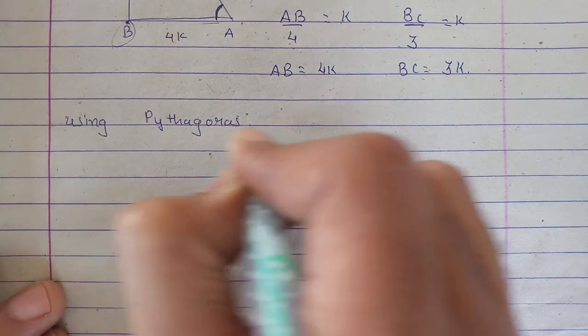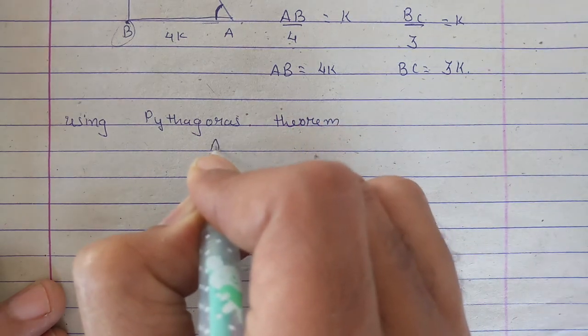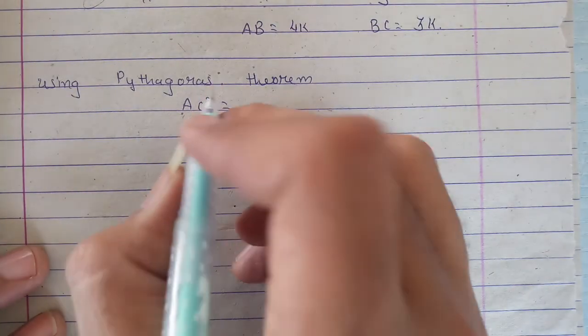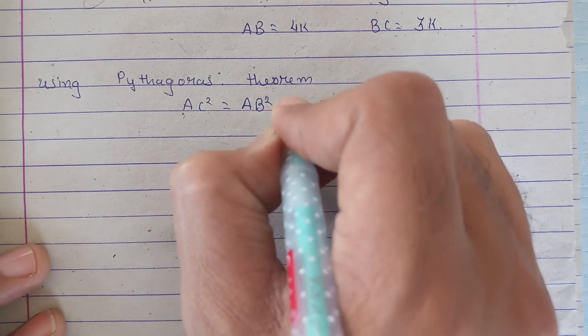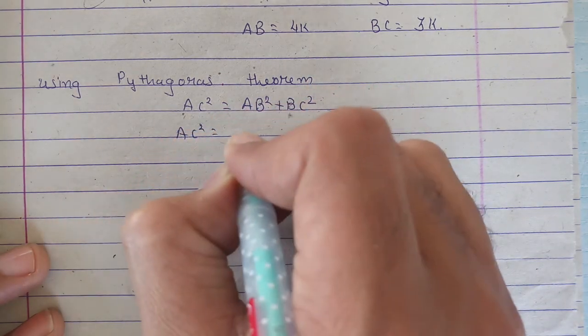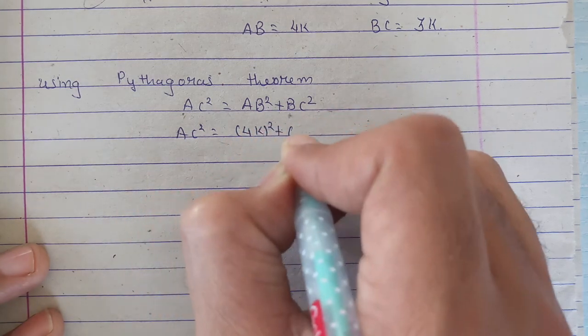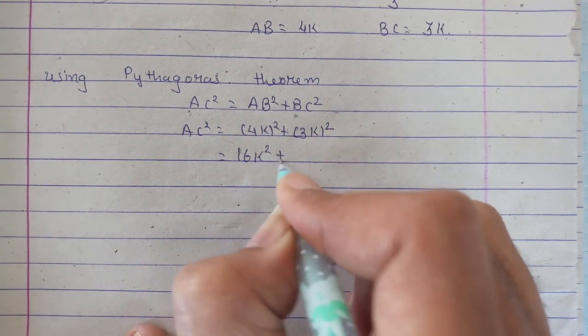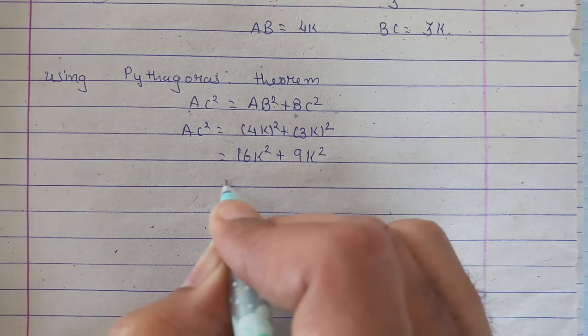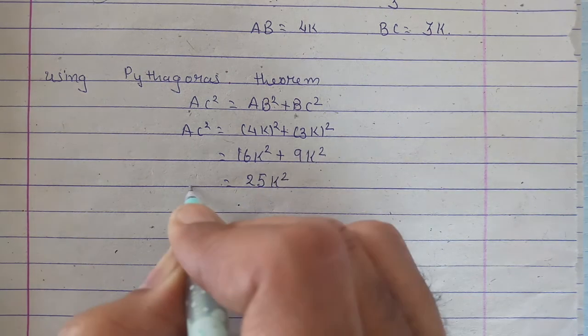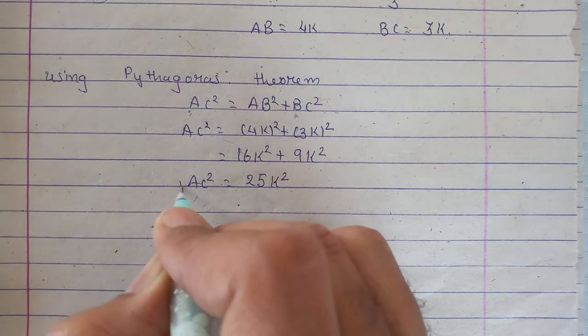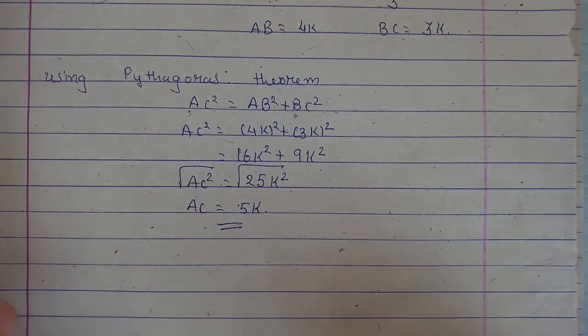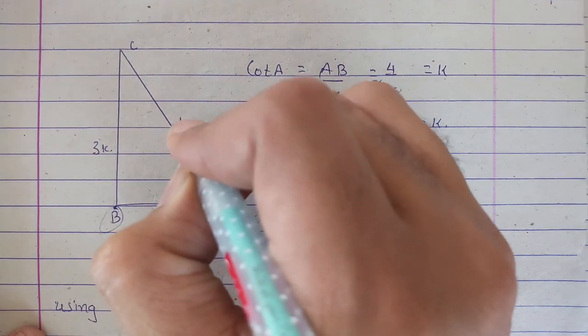For Pythagorean theorem, AC² is equal to AB² plus BC². So AC² is equal to AB² plus BC². AB is 4K and BC is 3K. So 4K squared, that will be 16K², and BC is 9K². That can be like 25K². So AC² is equal to 25K². Here we will take square root, so AC will be 5K.